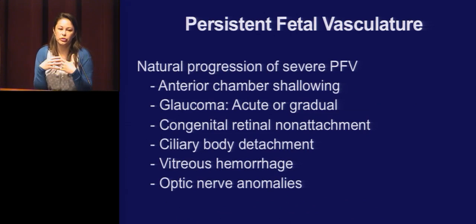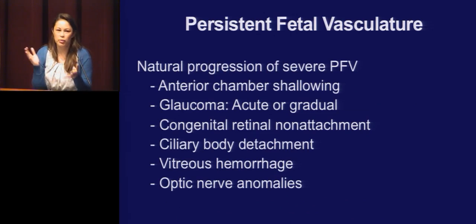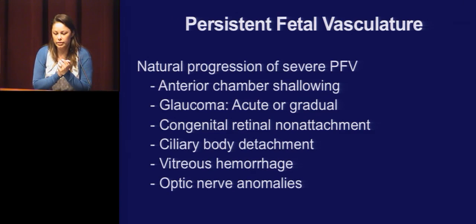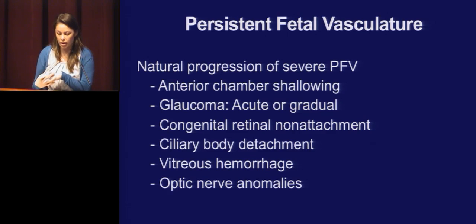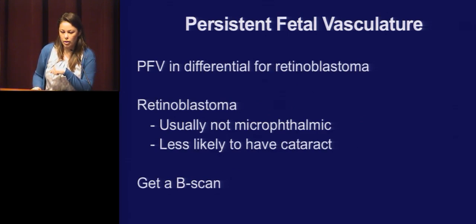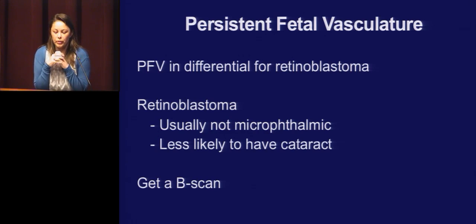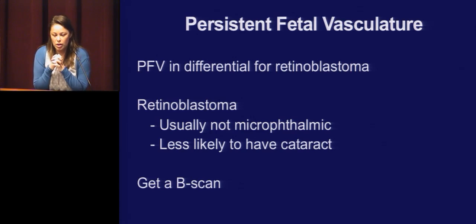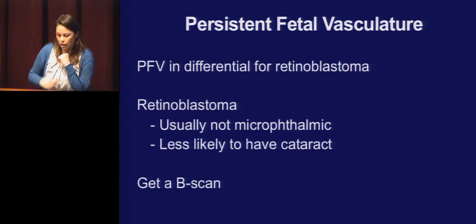There's a natural progression: you get anterior chamber shallowing and glaucoma. I've seen kids where their pressure is normal in the office, and then between when we see them and schedule surgery, they develop glaucoma. They can have congenital retinal non-attachment, ciliary body detachment, vitreous hemorrhage, and optic nerve anomalies. PFV is in the differential for retinoblastoma, so you want to get an ultrasound. One key difference is the microphthalmia, and those patients are less likely to have a cataract as well.